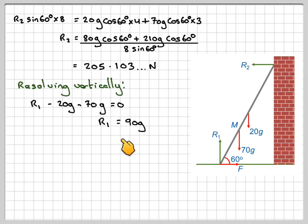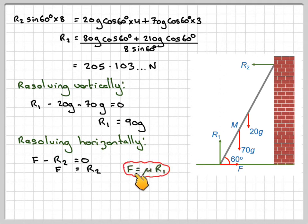And then resolving horizontally, we're going to have F in that direction minus R2 is equal to 0. That means that F is equal to R2, and then we also know that F is equal to mu times the normal here, or the normal reaction R1.